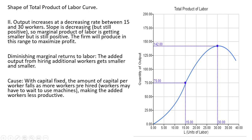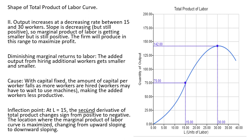Why do we have diminishing marginal returns? With capital fixed, the amount of capital per worker falls as more workers are hired — workers may have to wait to use machines, making added workers less productive. As a minor point, the inflection point occurs at L equals 15, where the second derivative of the total product changes sign from positive to negative. This is the location where the marginal product of labor curve is maximized, changing from upward sloping to downward sloping.